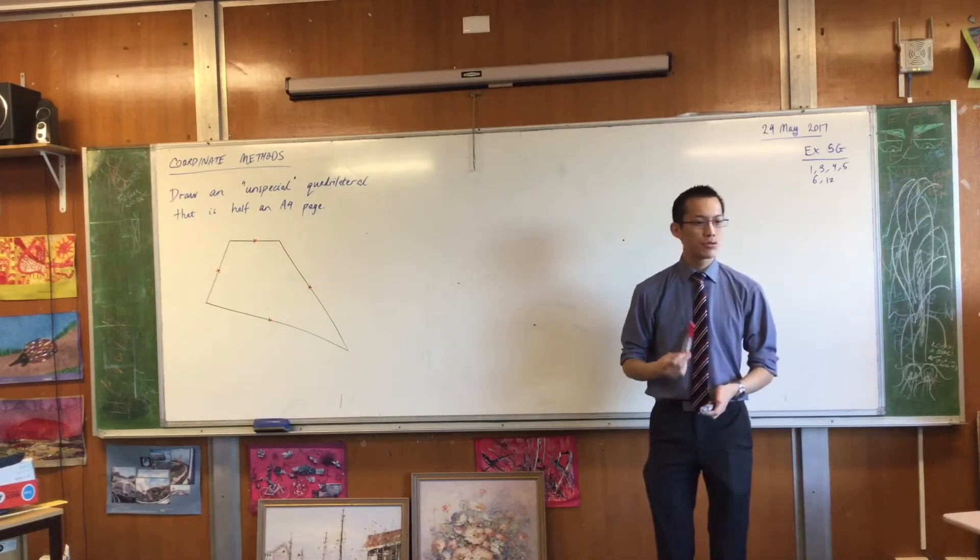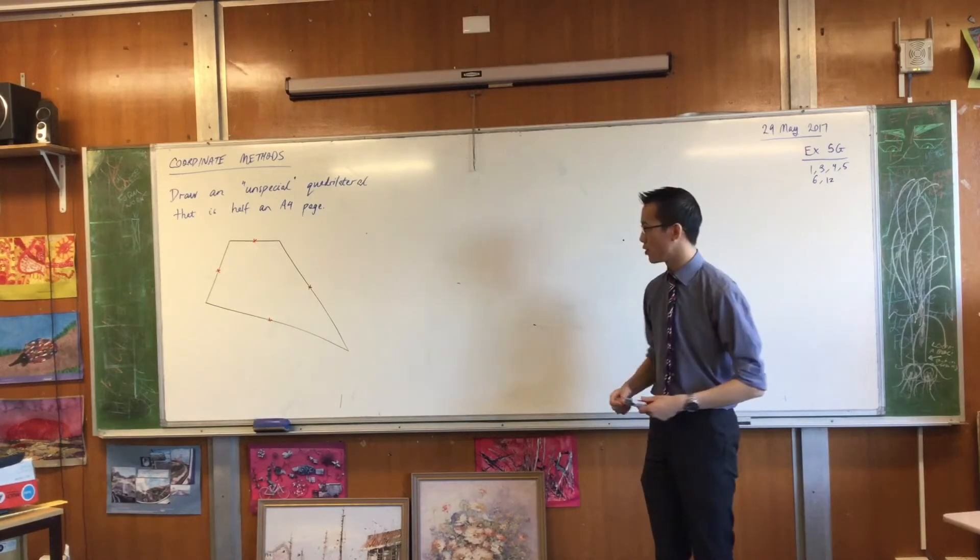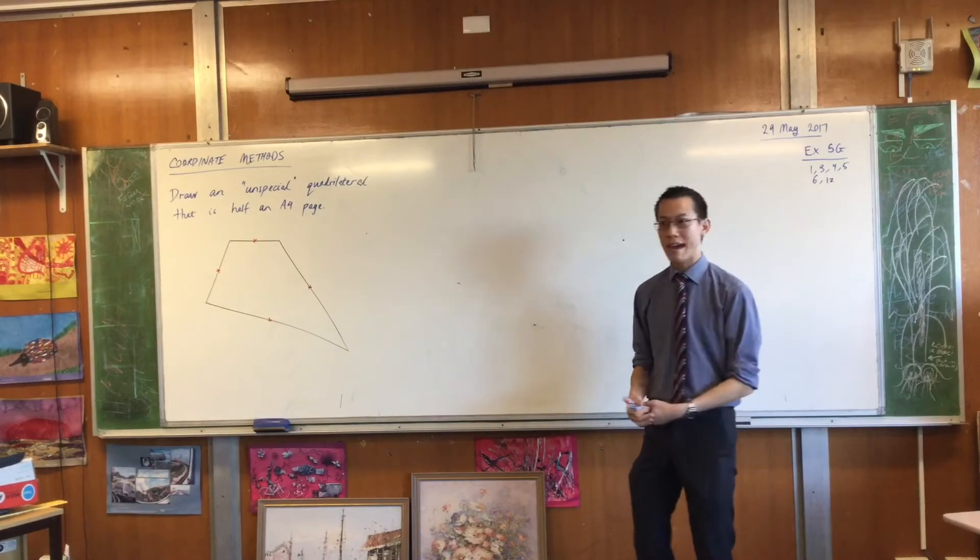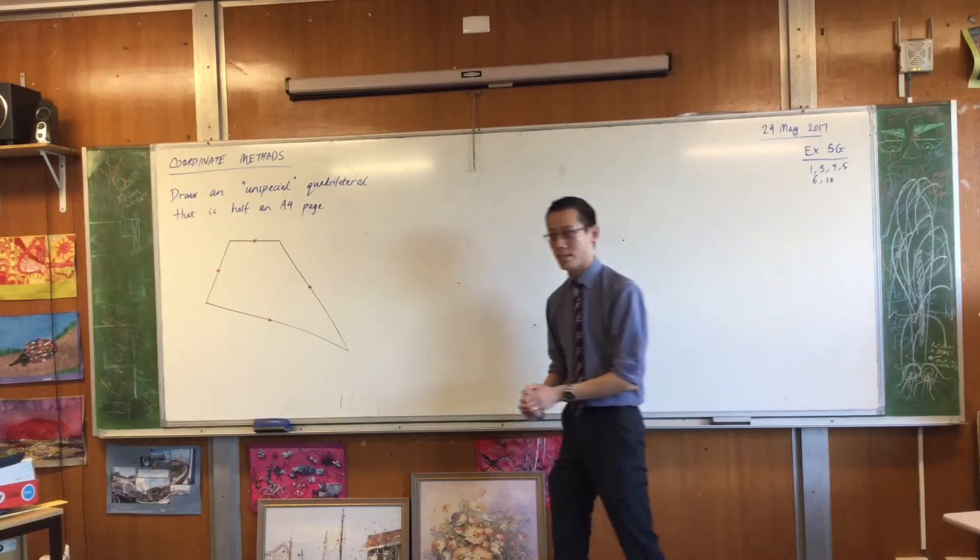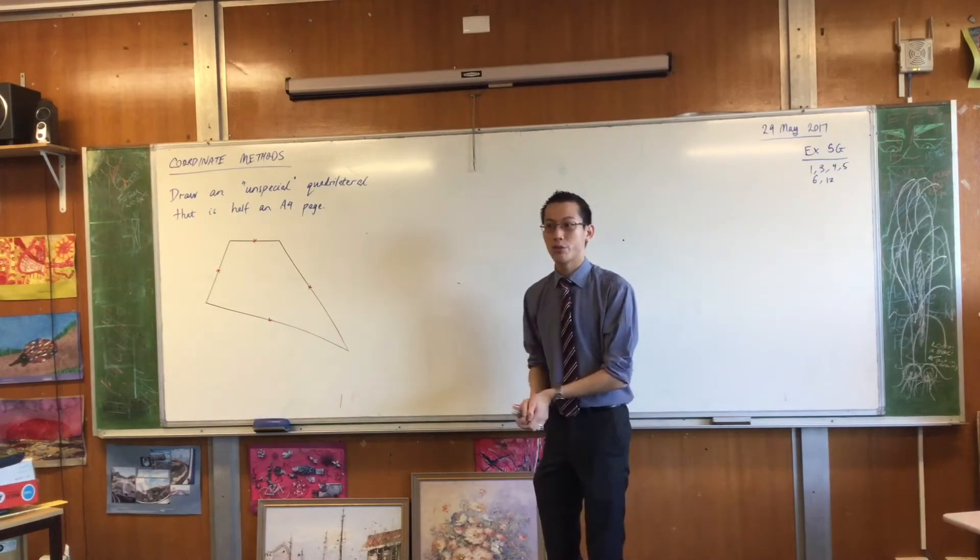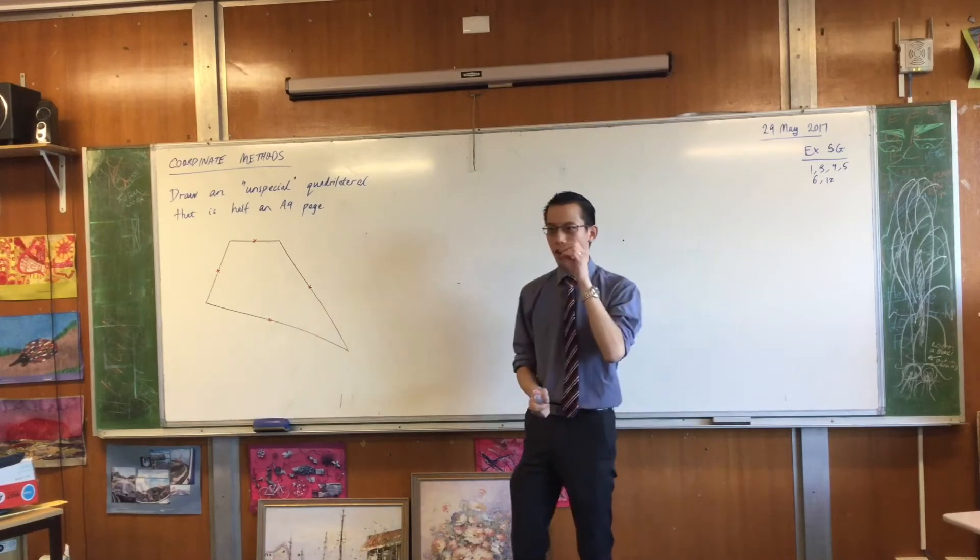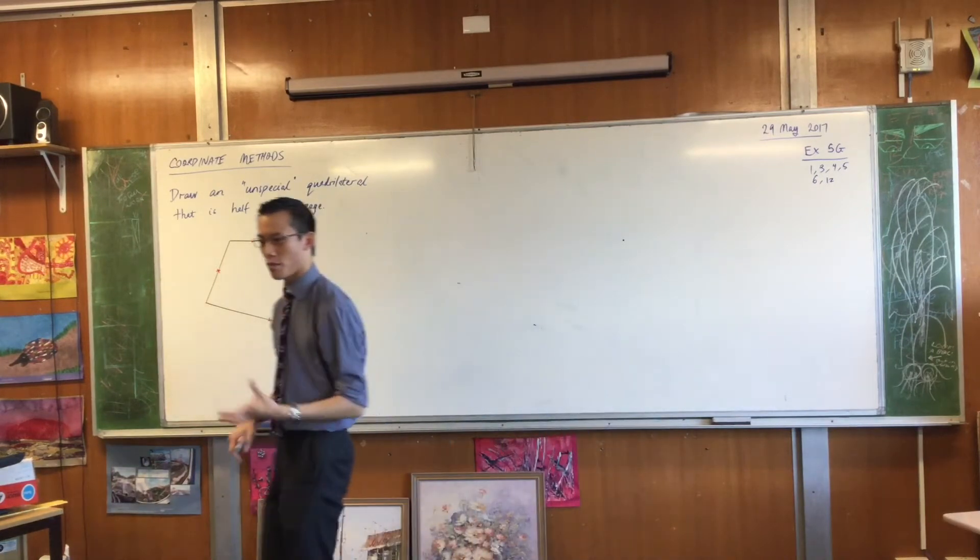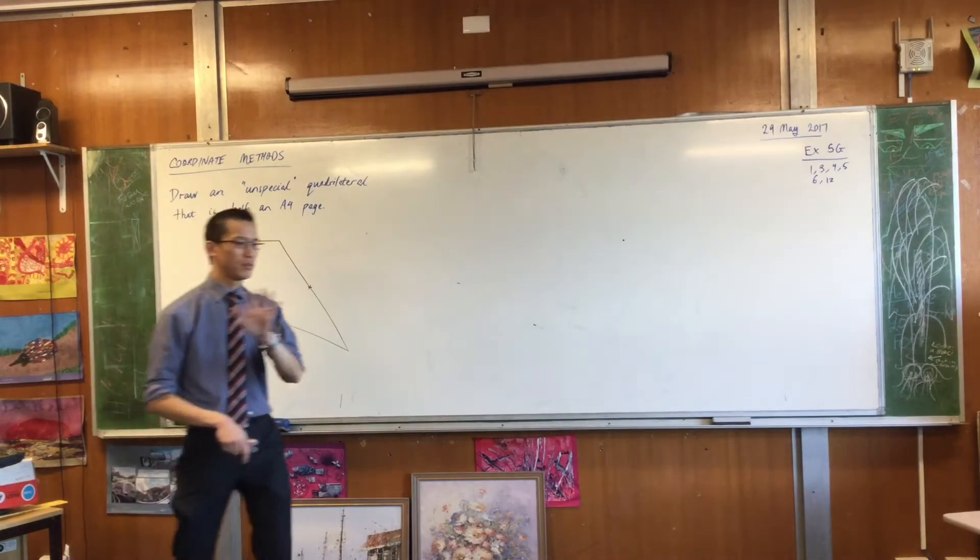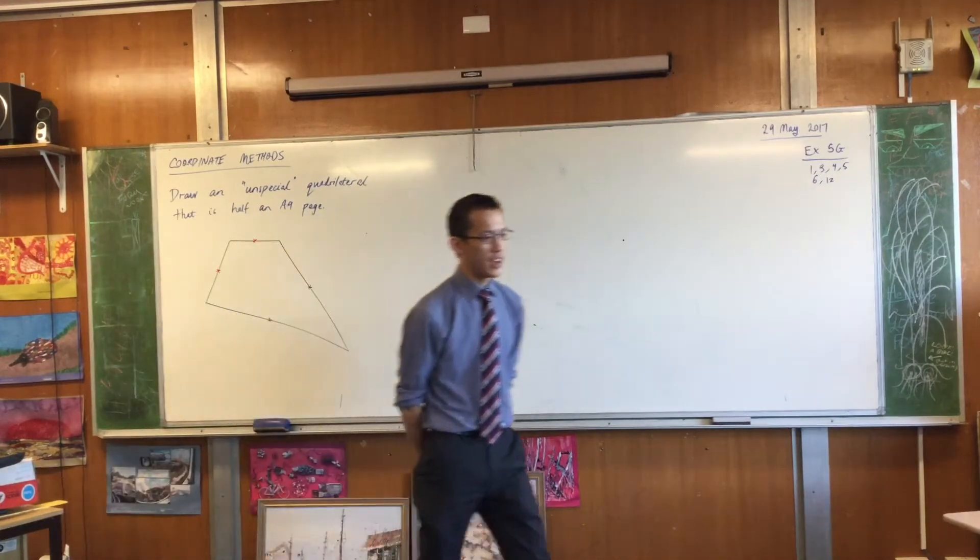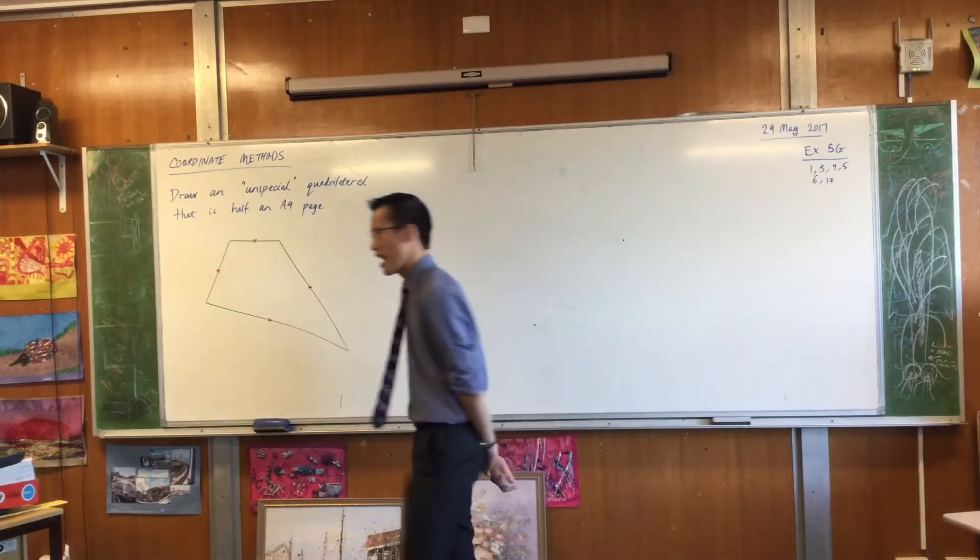I then want you to join those midpoints because you have four sides, so now you have four points and we can make them the four vertices of a new quadrilateral. Now once you've got your four points and you join them up, I want you to look at your shape and then I also want you to look at the shape of the person next to you.